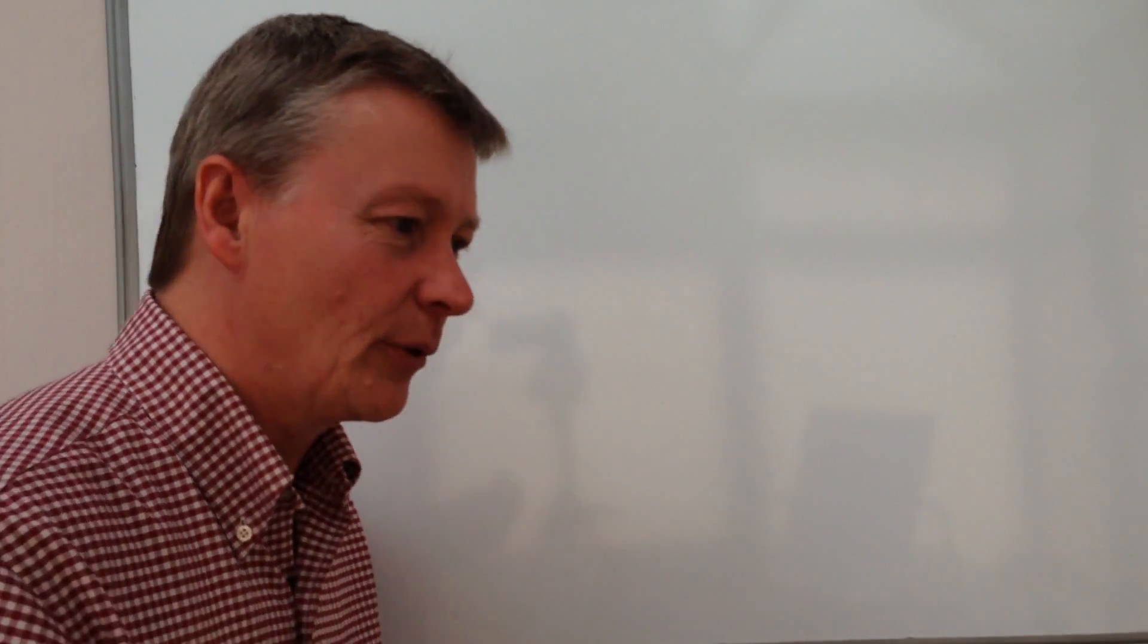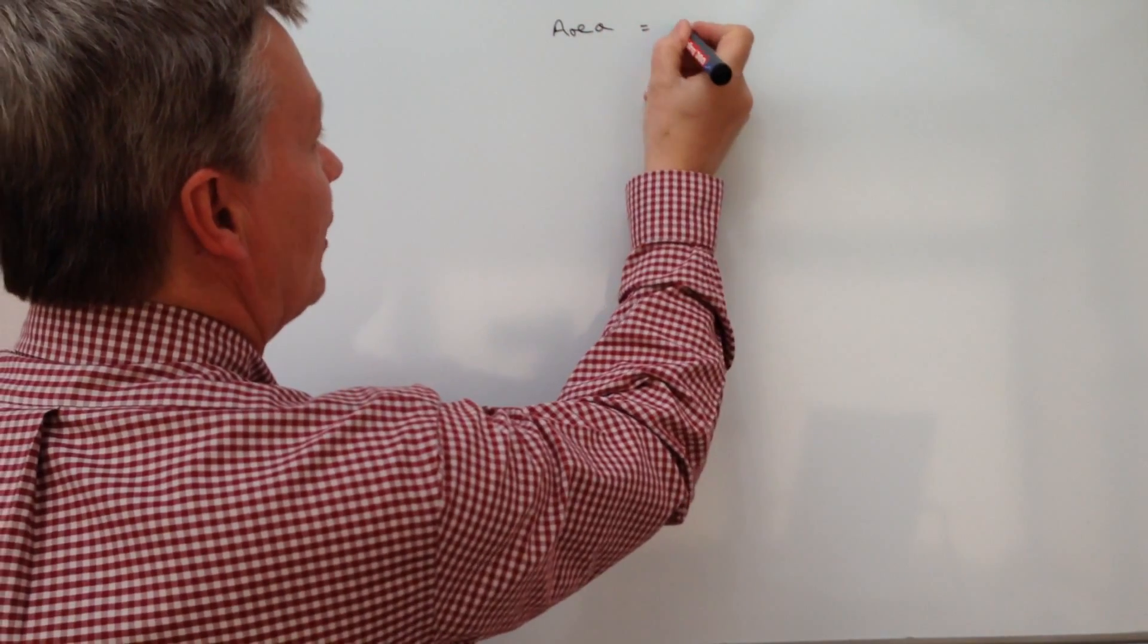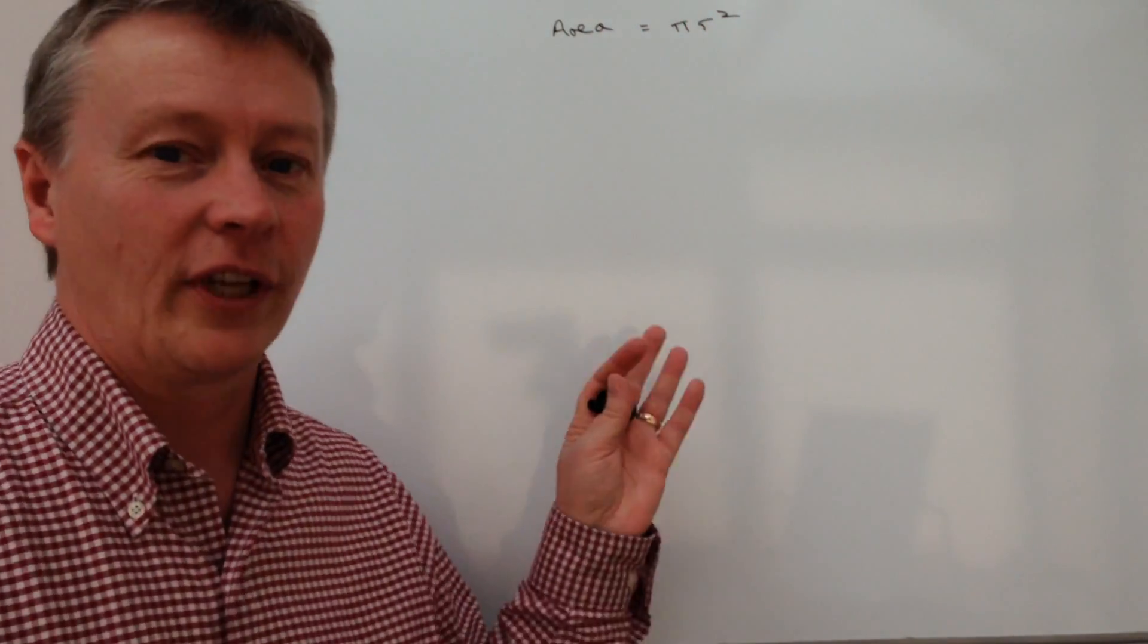They're relatively straightforward because actually we're dealing with formulas that we already know. So the formula that we're going to be looking at generally is the area of a circle equals pi r squared.